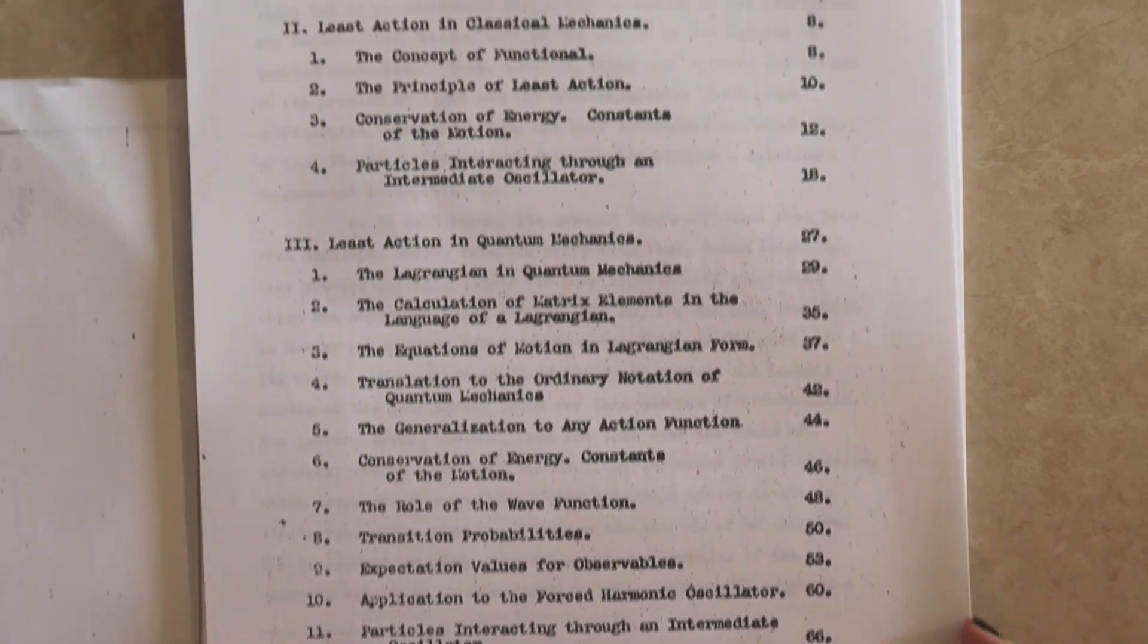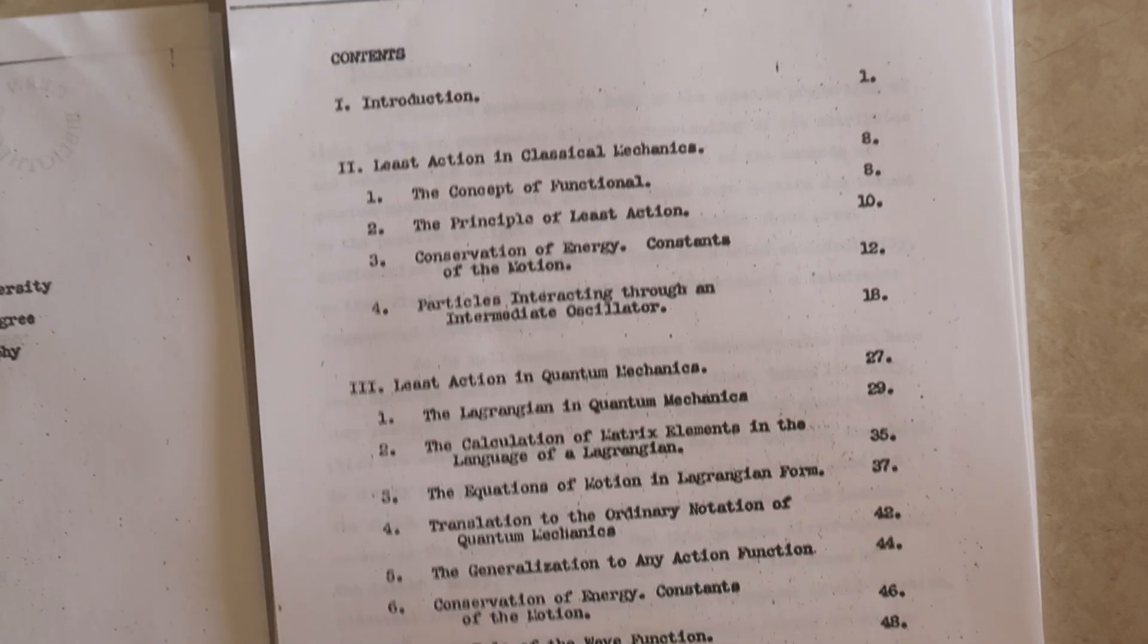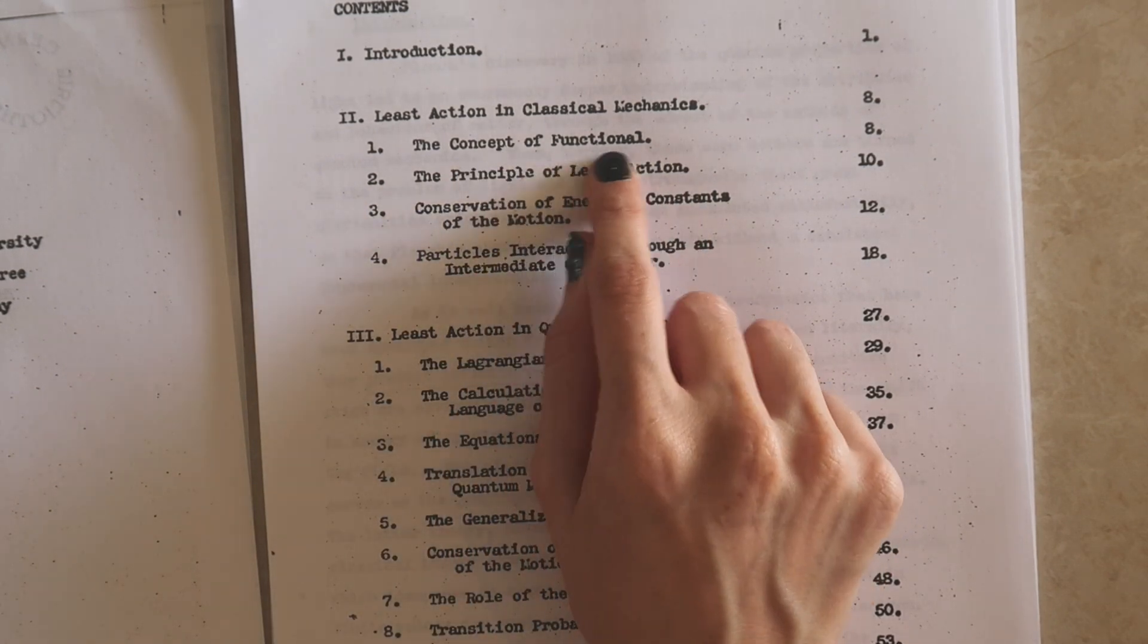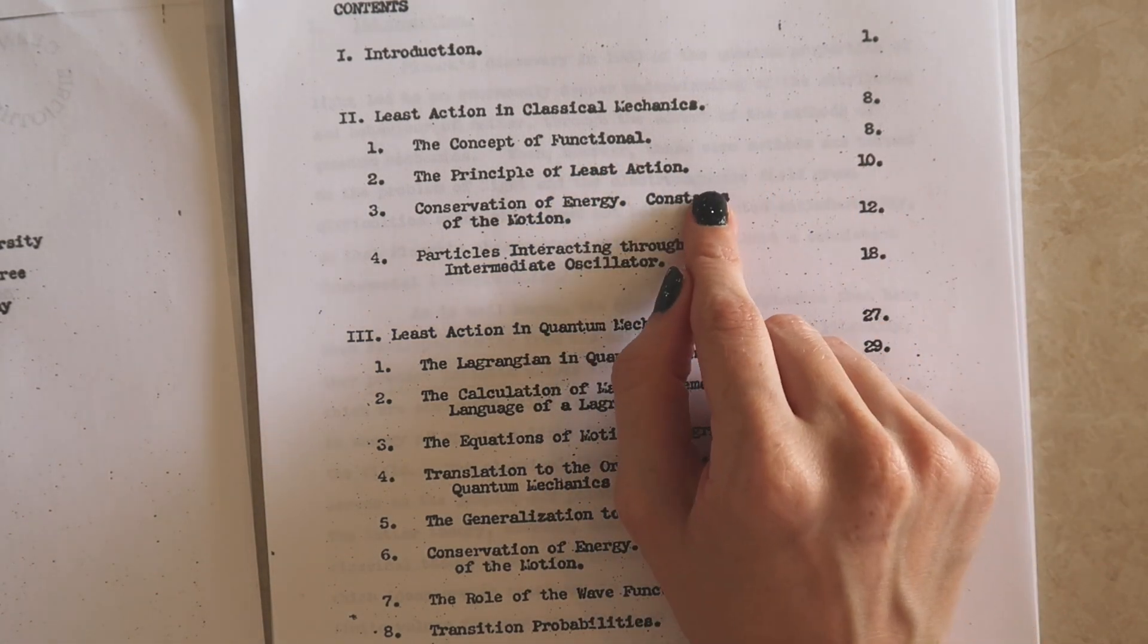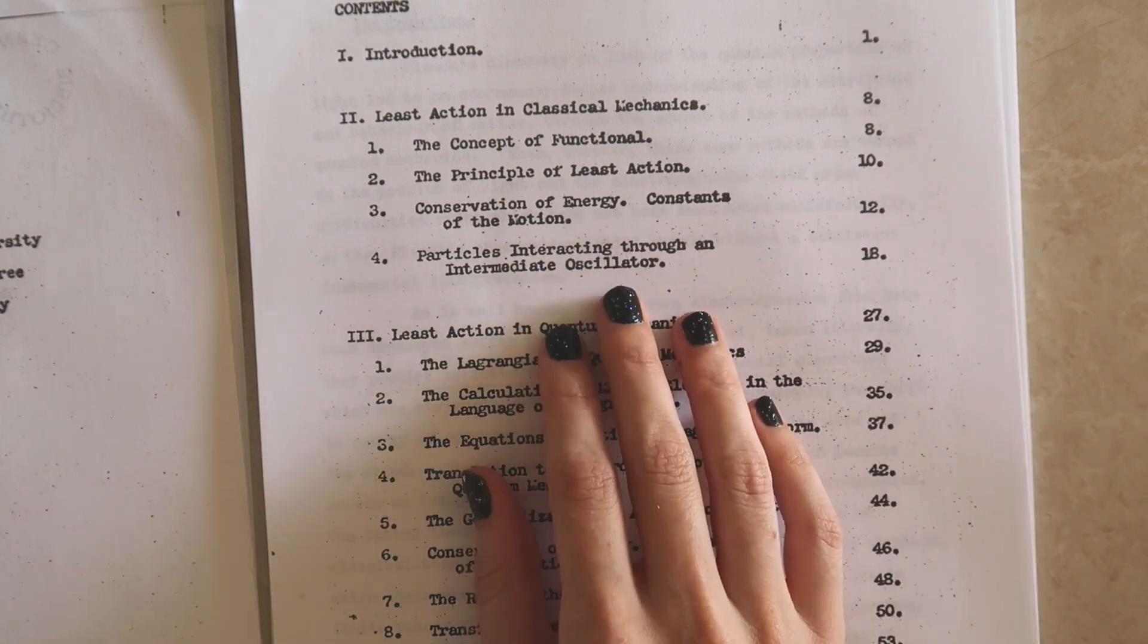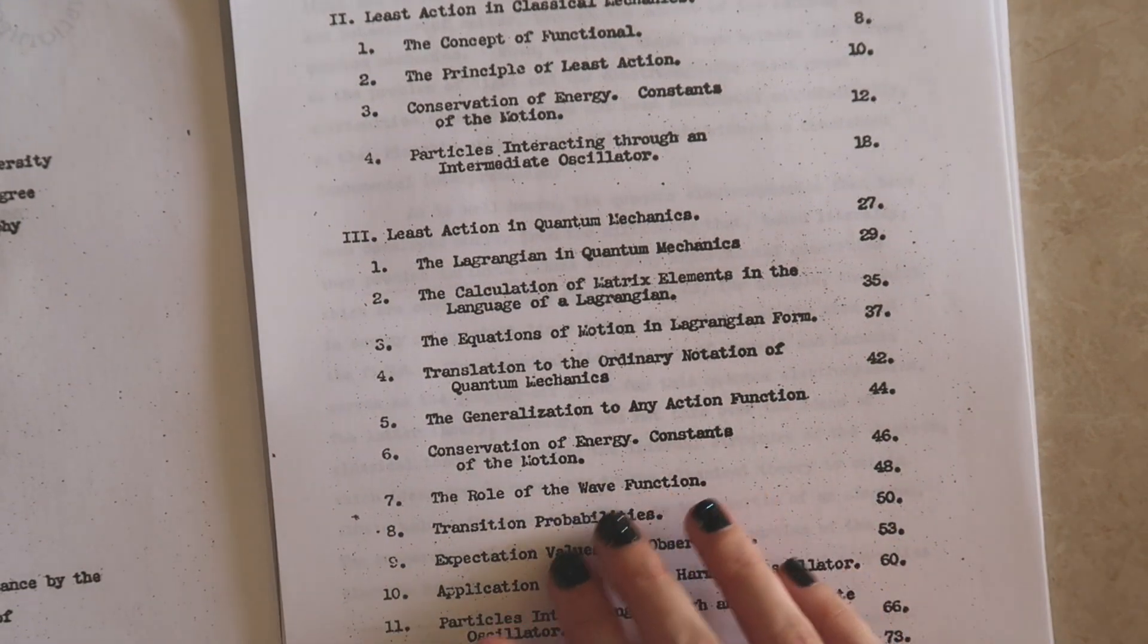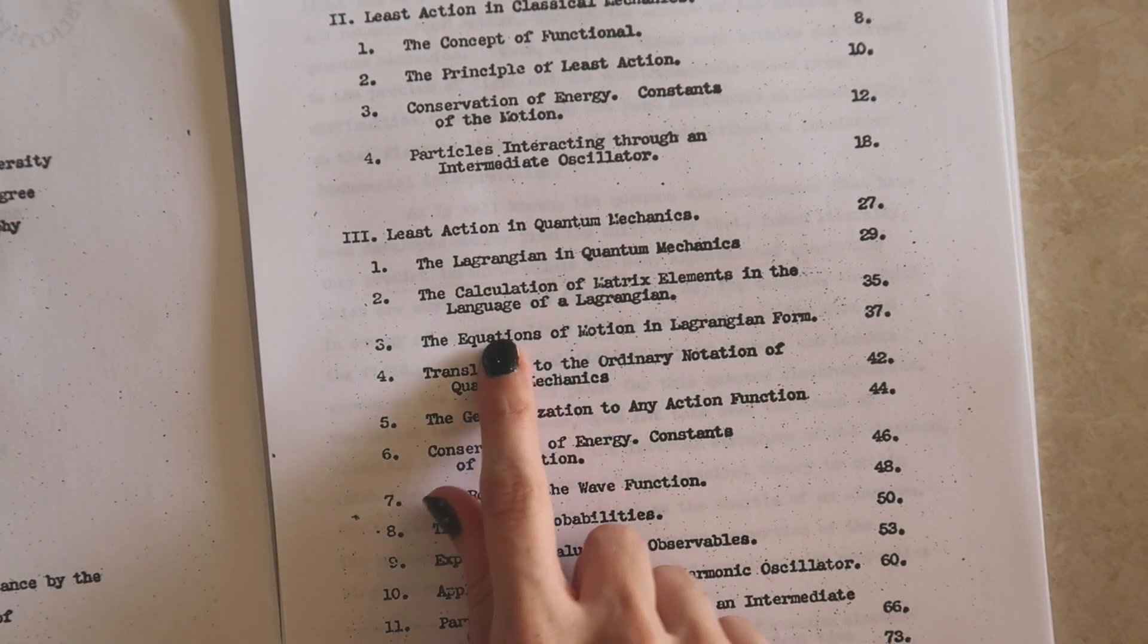Feynman liked to emphasize the value of approaching all problems in a new way and that's what we really see him doing here in this work. He's coming up with a new way to approach things. Through his discussion of least action he talks about the mathematical concept of a functional which is really just a number that depends on a function. He talks about conservation of energy and things like Noether's theorem and he does some examples for things like particles interacting through an intermediate oscillator and down here in the part where he needs to make it work for quantum mechanics he talks about the Lagrangian in quantum mechanics, he talks about equations of motion.